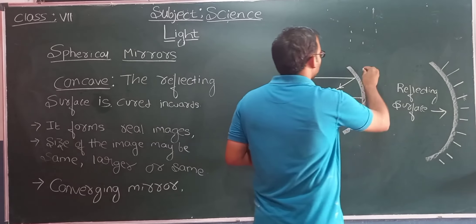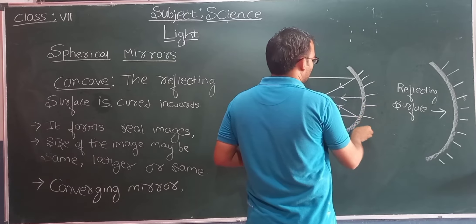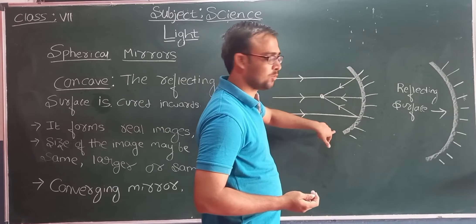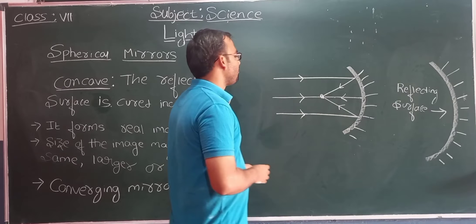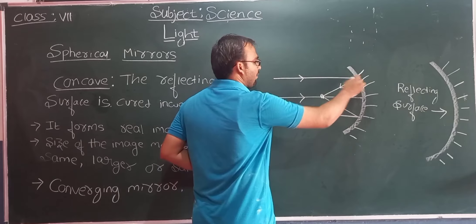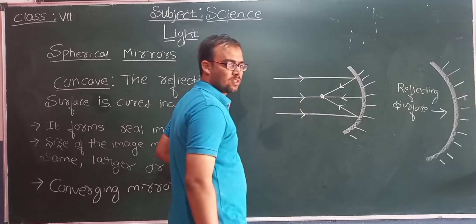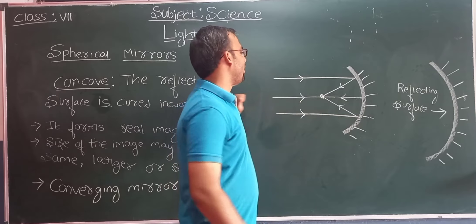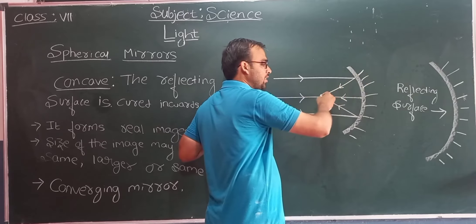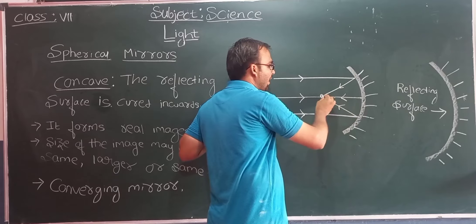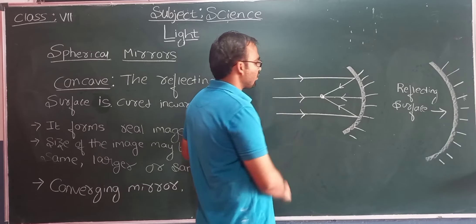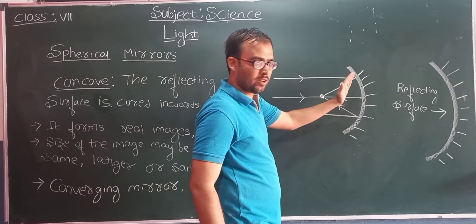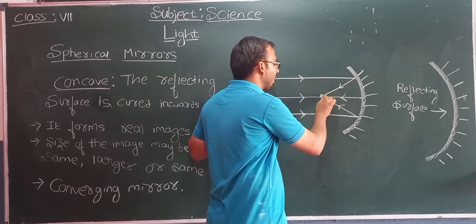Look at here students — this is a concave mirror. These lines indicate the non-reflecting part, and this is the reflecting surface. Whenever light rays are incident on the reflecting part, the light rays get reflected back and converge at a point. So whenever light rays are incident on the concave mirror, they reflect and converge at a point. Because of this, the concave mirror is known as a converging mirror.